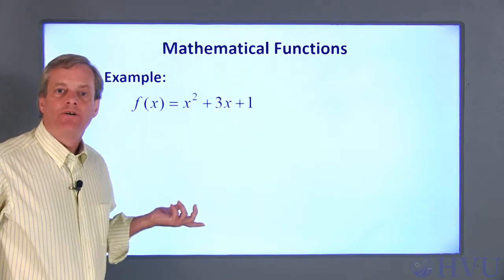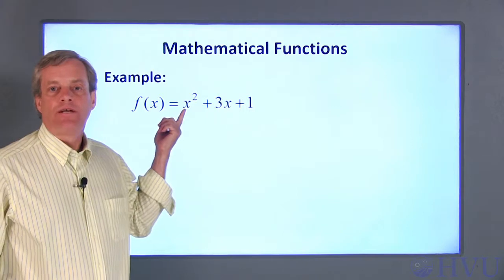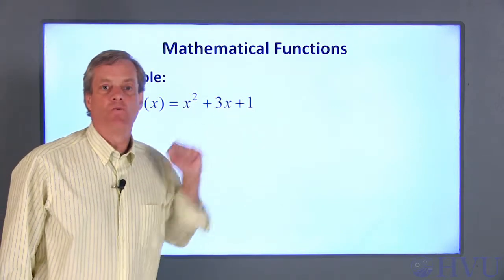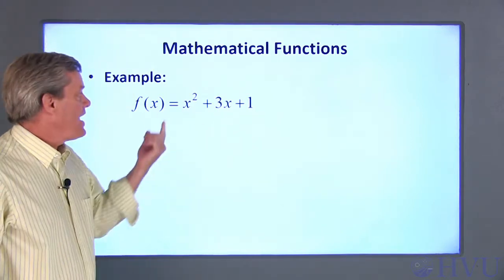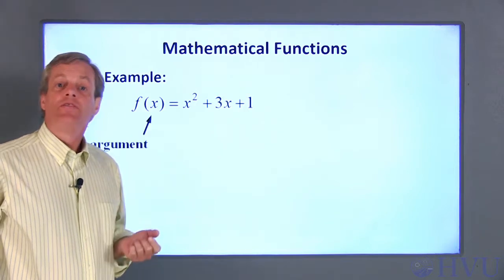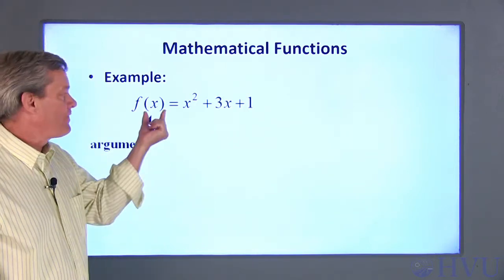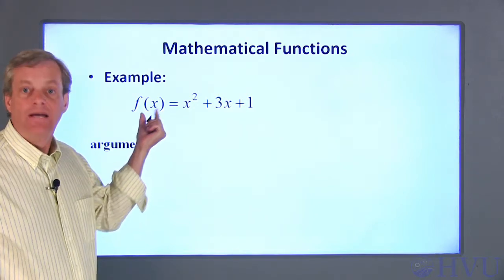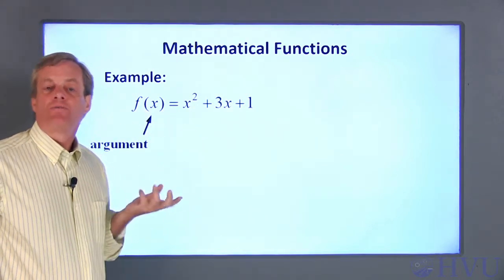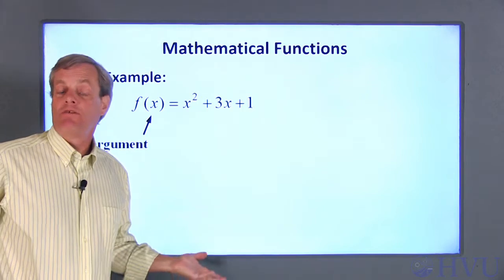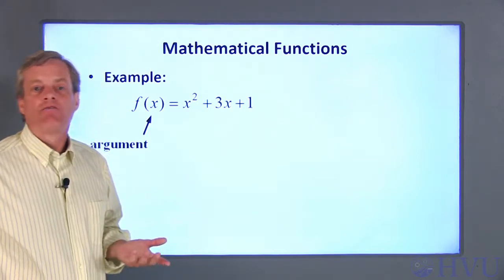As an example of a mathematical function, consider f equals x squared plus 3x plus 1. The function has a name, f. The function's argument is x. It appears in parentheses after the function name. This is in symbolic form, since it isn't defined for a specific value of x. However, we can use the symbolic function here to determine the value at any arbitrary value of x.